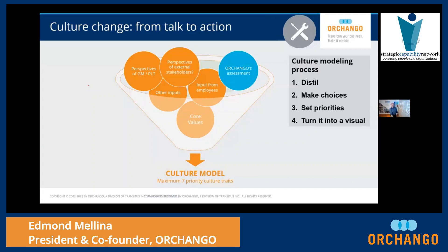The idea is to distill and make choices and set priorities. What comes at the bottom of the funnel is a culture model that you turn into a visual. Ideally you focus on three or four culture traits that are going to be the focus of the shift — in the case of GSK, it was three culture traits. If it's more, you typically have to do a phased approach. It's very important to go through this exercise because otherwise there is no sense of focus, priorities, and clarity regarding what you're trying to do.